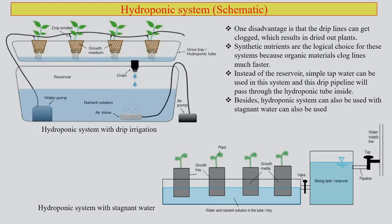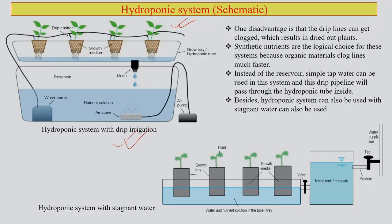If you look at this particular hydroponic system, you have a system with hydroponics along with drip irrigation. As you may recall from a previous lecture, we discussed drip irrigation in great detail. This particular schematic diagram demonstrates how drip irrigation can be integrated with the hydroponic system.